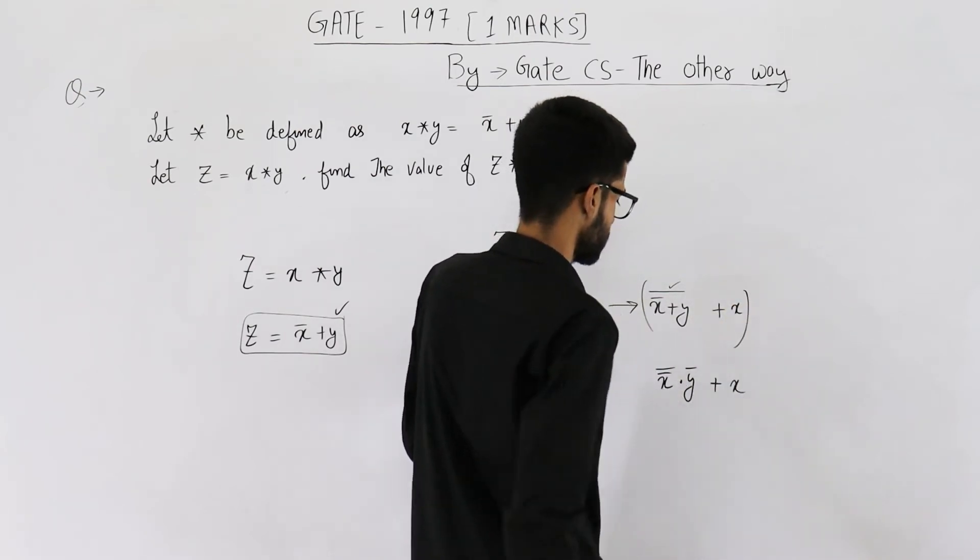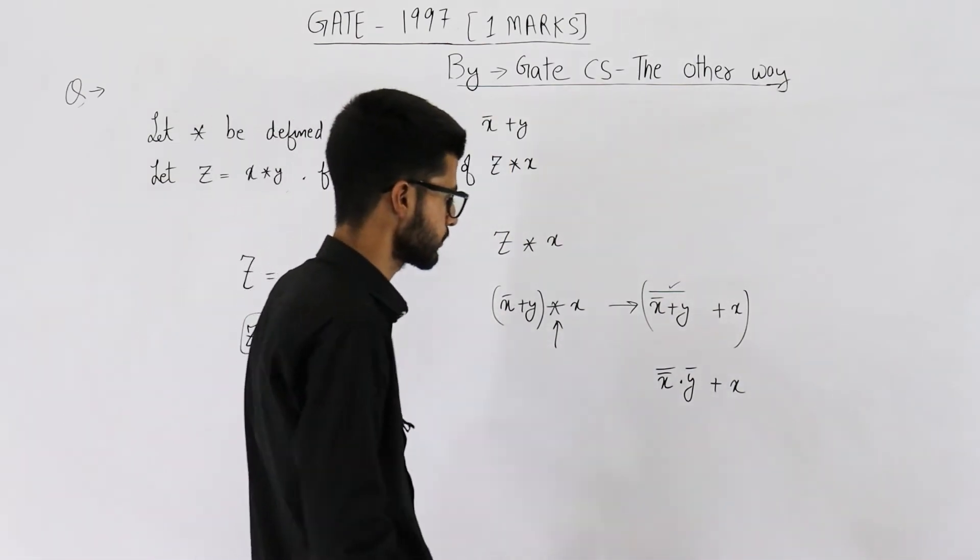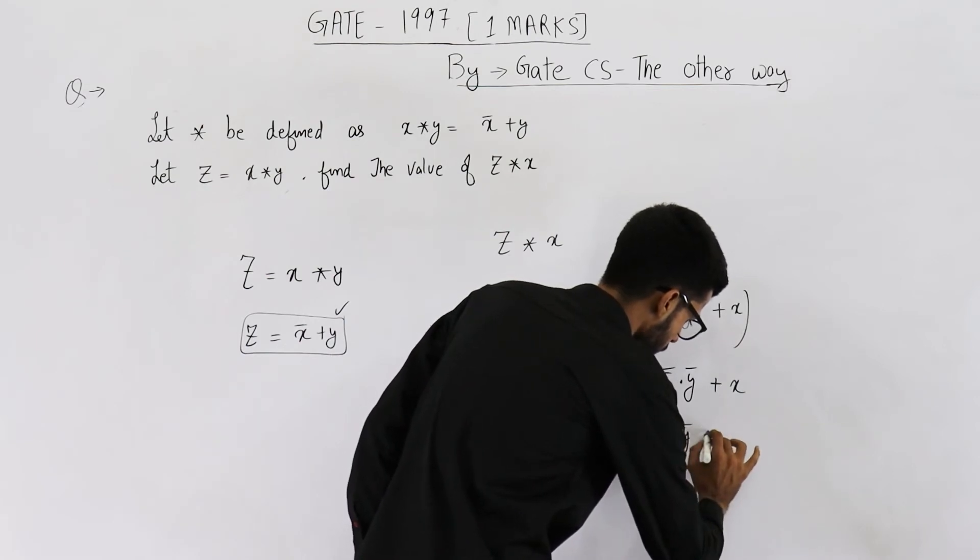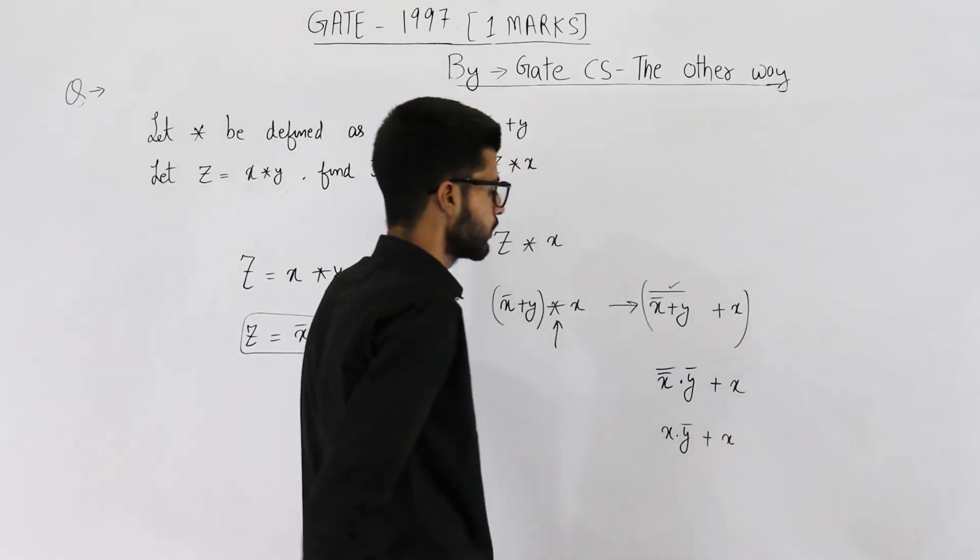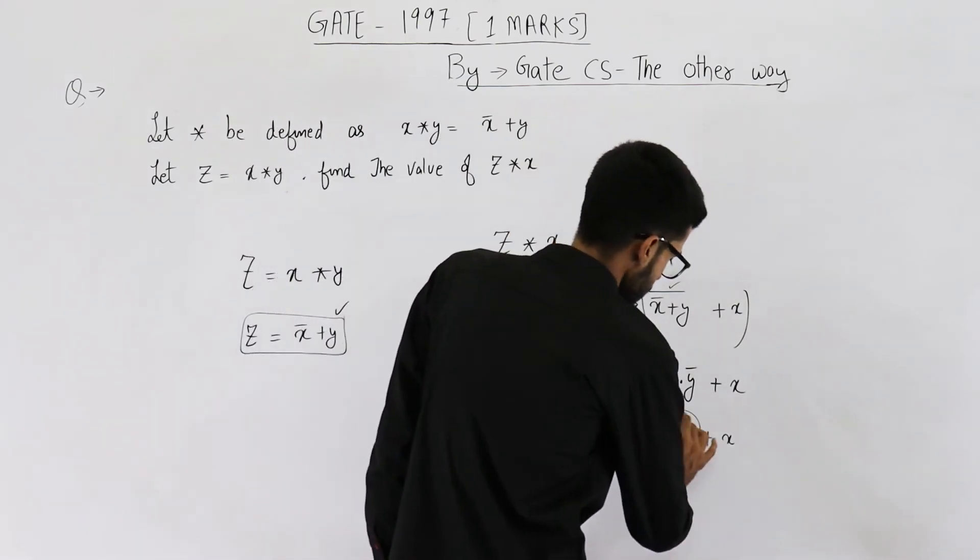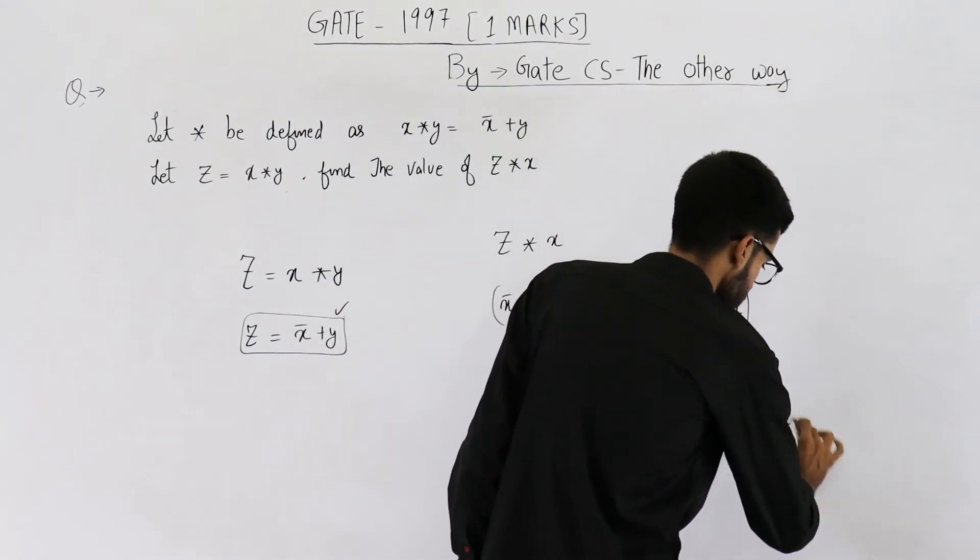Now x double complement will evaluate to x, so you will get x dot y complement plus x. Now you can apply absorption law here and you'll see this term can be neglected, so your answer is x.